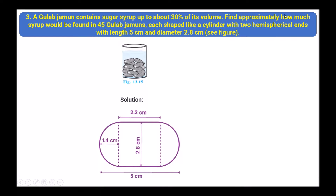Next: a gulab jamun contains sugar syrup up to about 30% of its volume. Find approximately how much syrup will be found in 45 gulab jamuns, each shaped like a cylinder with two hemispherical ends, with length 5 centimeter and diameter 2.8 centimeter. This is the shape of a gulab jamun — cylindrical with two hemispherical ends. The diameter is 2.8 cm and the length is 5 centimeter.